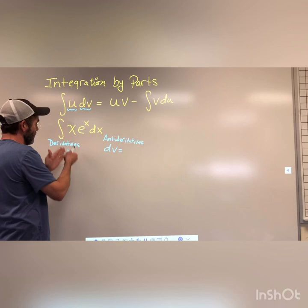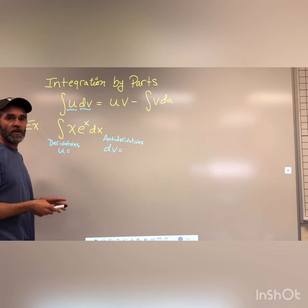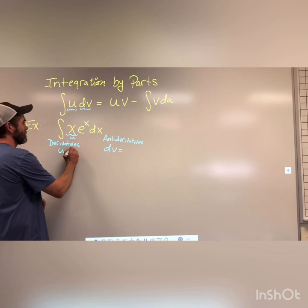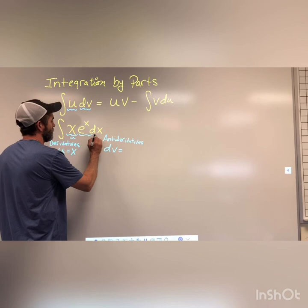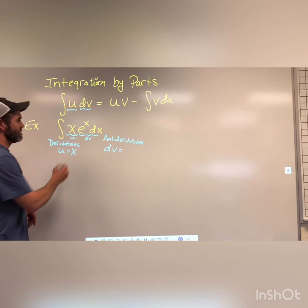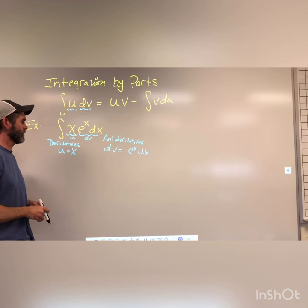Looking at this problem, we can take the derivative of x easily, and we can also take the derivative of eˣ. So I'll just pick what's easiest to call u. Let's call u = x. The tricky part is: if I call something u, everything else has to be the dv. So dv has to equal eˣ dx — don't forget to bring that dx down.